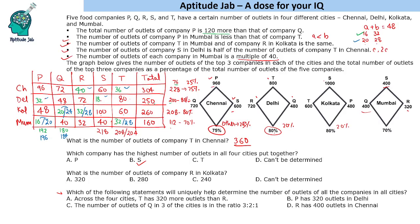The third question asks for the number of outlets of company R in Kolkata. This cannot be determined — R in Kolkata is either 320 or 280 depending on which case applies. We cannot uniquely determine the value.